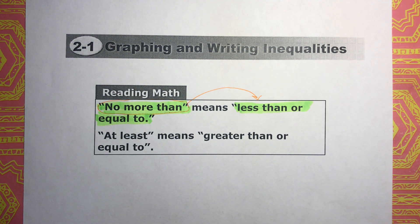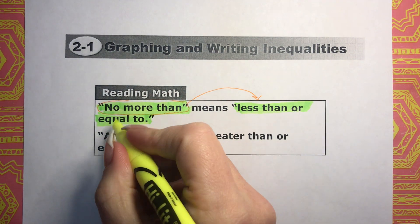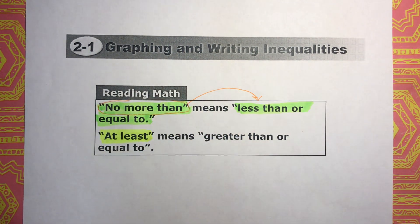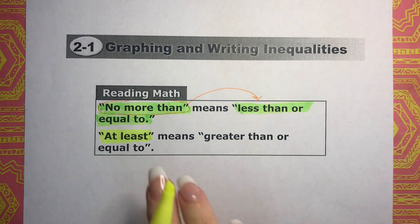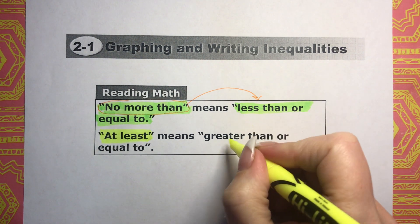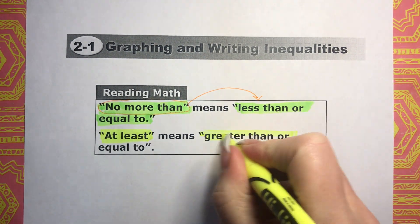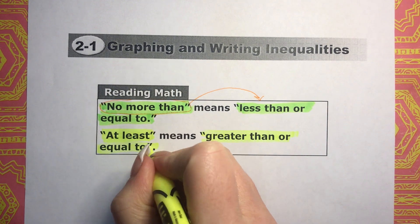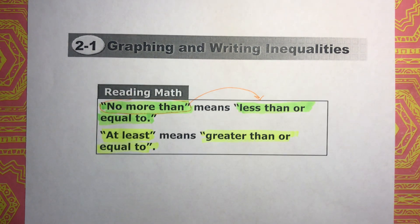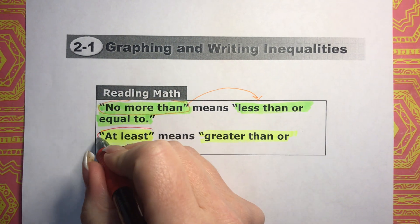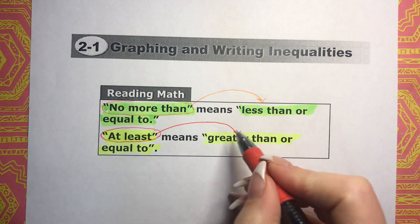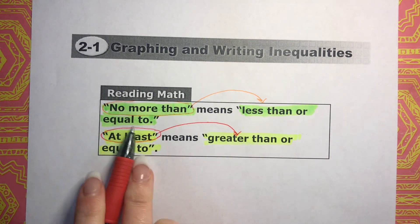There's another one where you'll see the keywords 'at least.' When you see 'at least,' this actually means greater than or equal to. So be on the lookout for the words 'at least' — it means greater than or equal to — and 'no more than.'